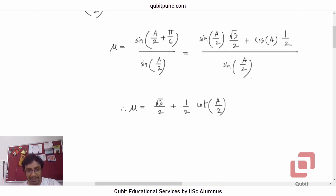First, you get 2, 2 LHS. So it will be 2μ. So 2μ will be equal to √3 plus cot A/2.